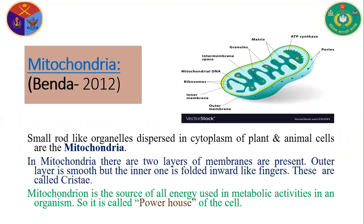Now we discuss mitochondria. Small rod-like organelles dispersed in the cytoplasm of plant and animal cells are called mitochondria. In mitochondria, there are two layers of membrane. The outer layer is smooth and the inner layer is folded inward like fingers — these folds are called cristae. Mitochondria is the source of energy used in metabolic activities in an organism, so it is called the powerhouse of the cell.